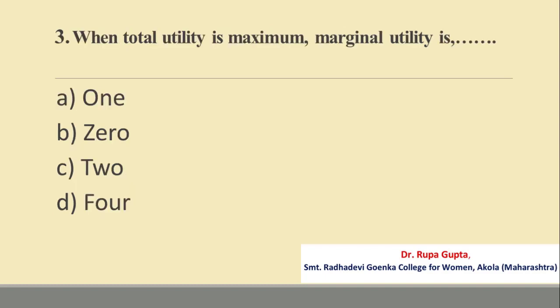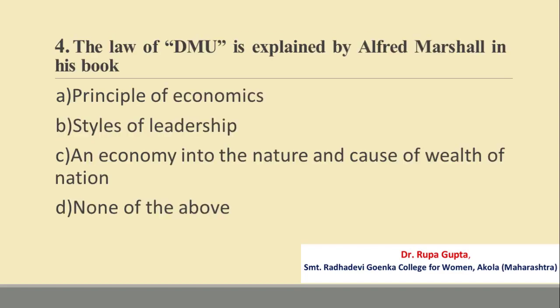Question number 3. When total utility is maximum, marginal utility is: A. 1, B. 0, C. 2, D. 4. The correct answer is B, that is 0.